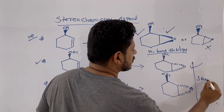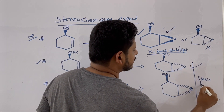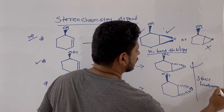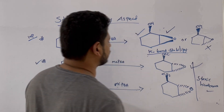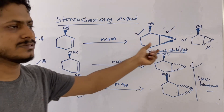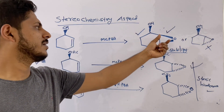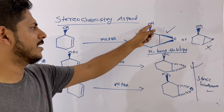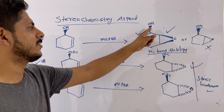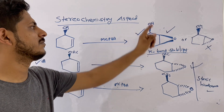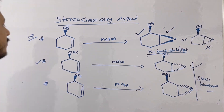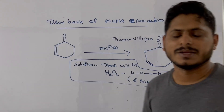To summarize: if a hydrogen-bonding group is present in your substrate, epoxidation will occur based on the stereochemistry of that hydrogen-bonding group — mCPBA attacks from the same face. If no hydrogen bonding is possible, the reaction is governed by steric effects.